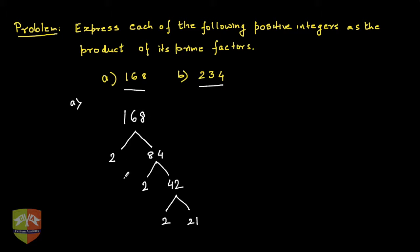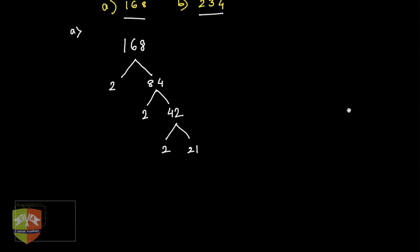So 2 times 21 is the last thing which we got. Let us take it further up, and now yes, so 21 clearly is 3 times 7.